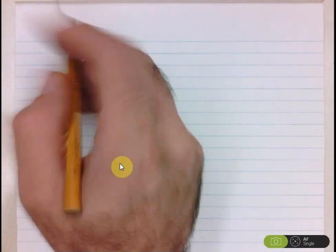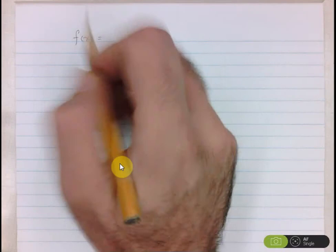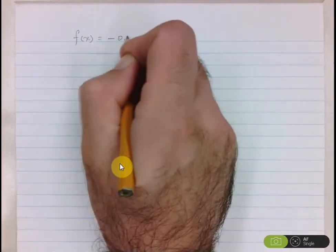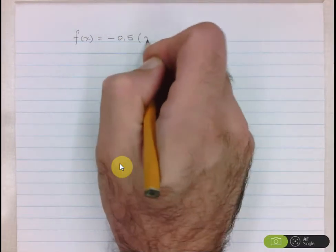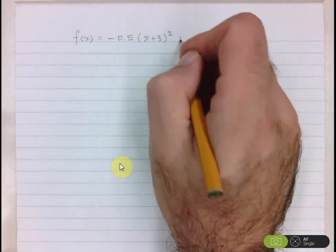Hi folks, we're going to take a look at an example of describing and sketching a transformed quadratic function. So the function that I'm going to work with here is f(x) equals negative 0.5 times x plus 3 all squared plus 2.